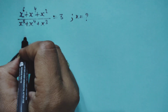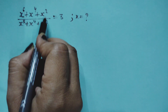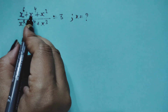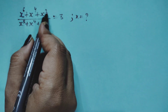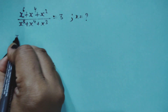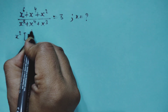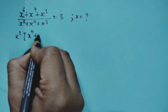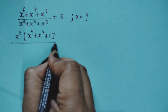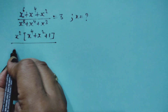First, in the numerator x⁶ + x⁴ + x², the lowest power is 2, so we take out x² as common. Inside we get x⁴ + x² + 1. In the denominator x⁵ + x⁴ + x³, x³ is common, giving x² + x + 1.